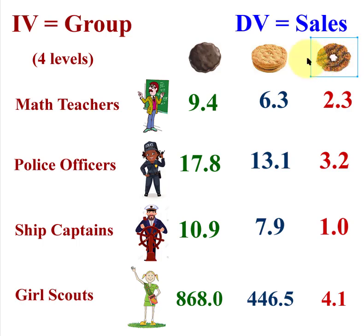What your MANOVA will do is lump all these together and say yes, there's a significant difference in there somewhere — but it doesn't tell you where.